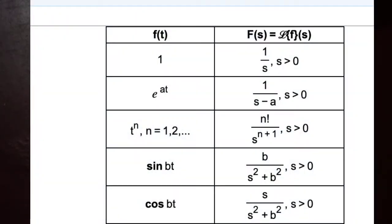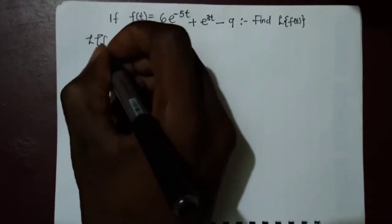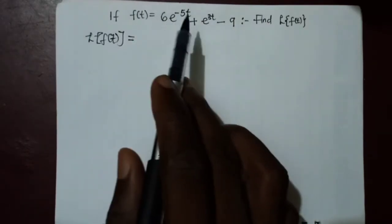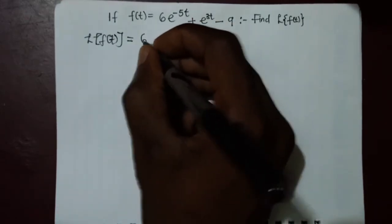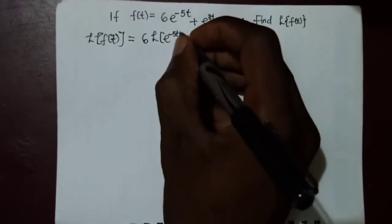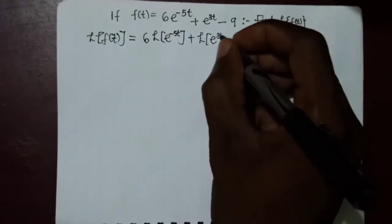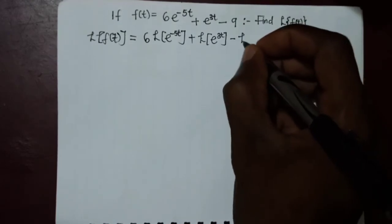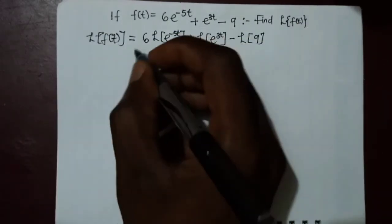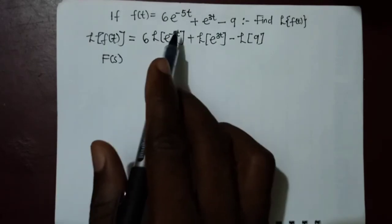On screen you can see the different formulas applicable to these problems. The Laplace transform of f(t) is found by applying the Laplace transform to each individual term. We factor 6 out and take the Laplace transform of e^(−5t), plus the Laplace transform of e^(3t), minus the Laplace transform of the constant 9. This gives us F(s), transforming from the t-domain into the s-domain.